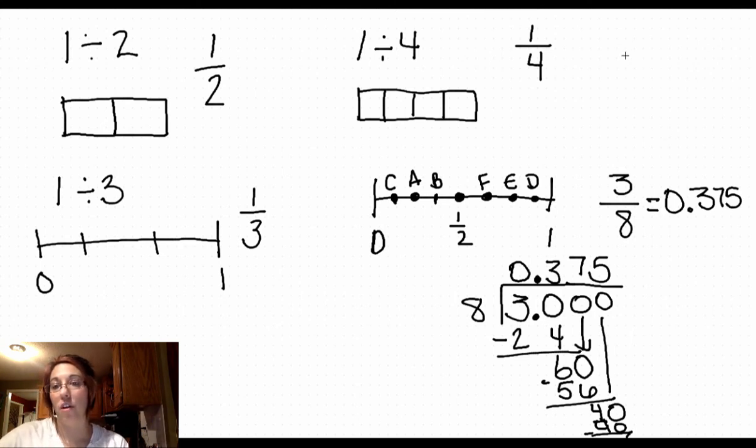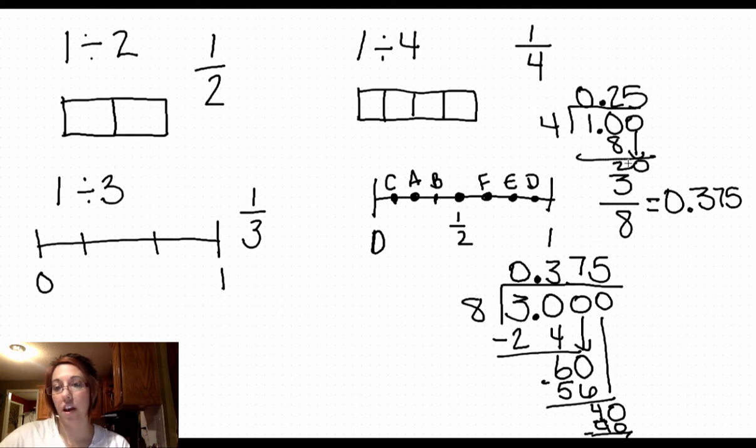So I went ahead and took 1 fourth to decimal form. The 1 would be my dividend. The 4 would be my divisor. Add a 0, bring it down. 4 will go into 10, 2 times. So my decimal form would be 0.25.